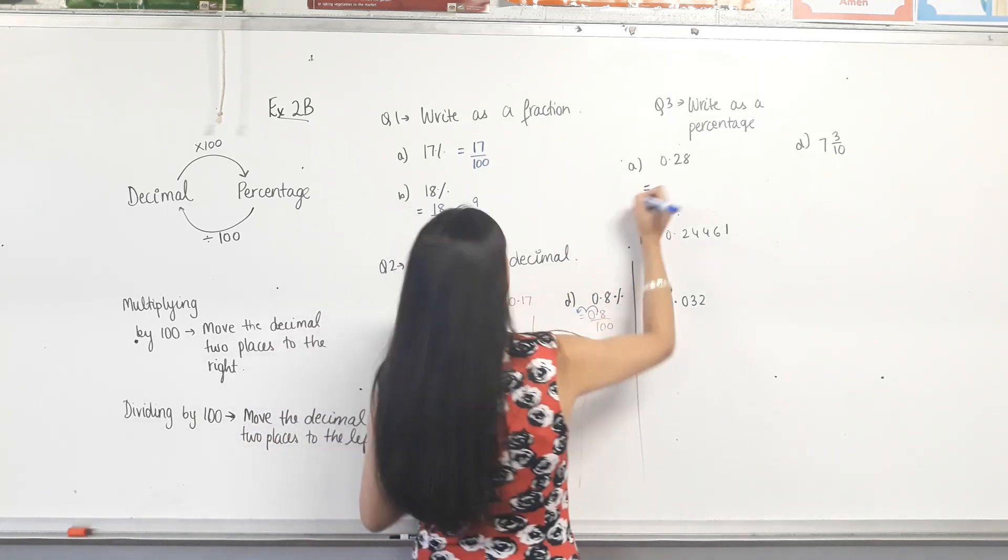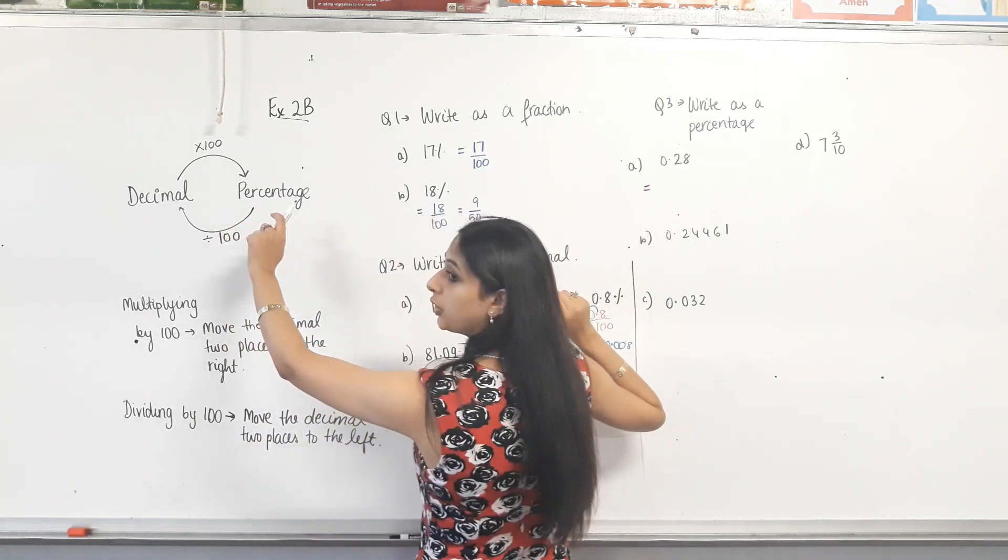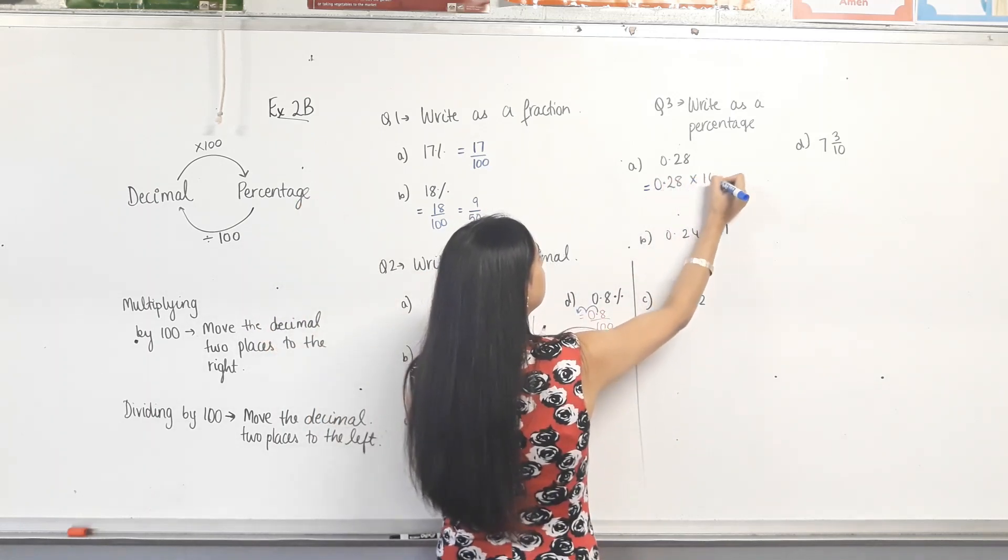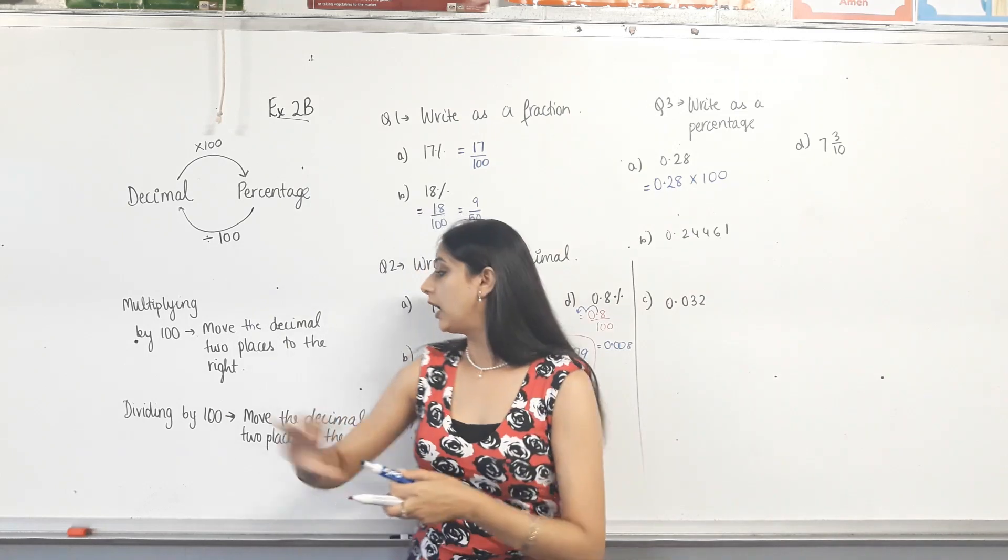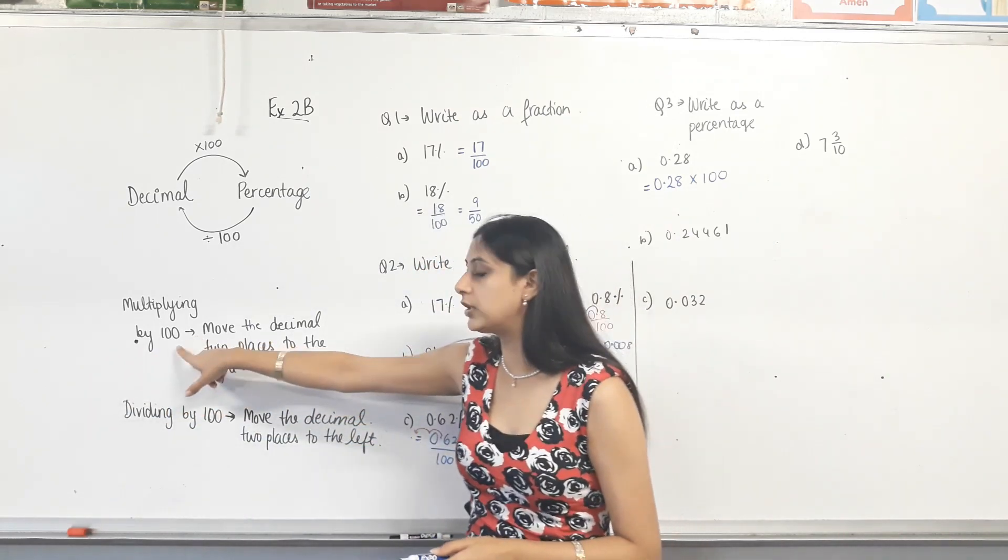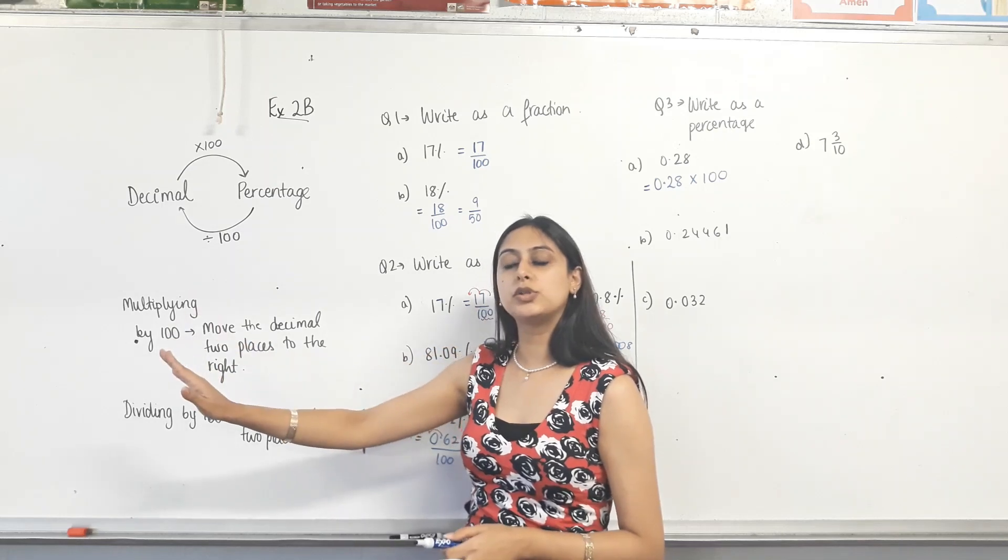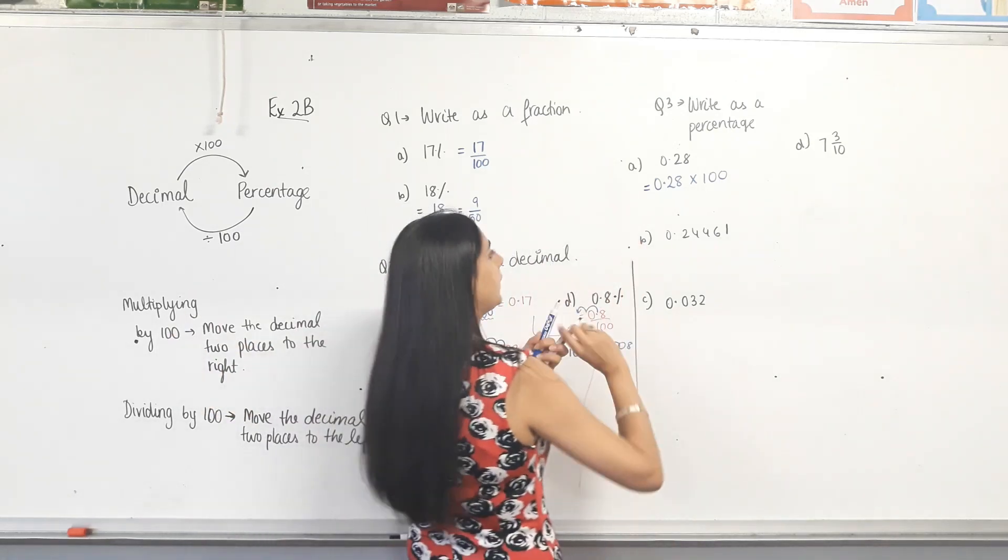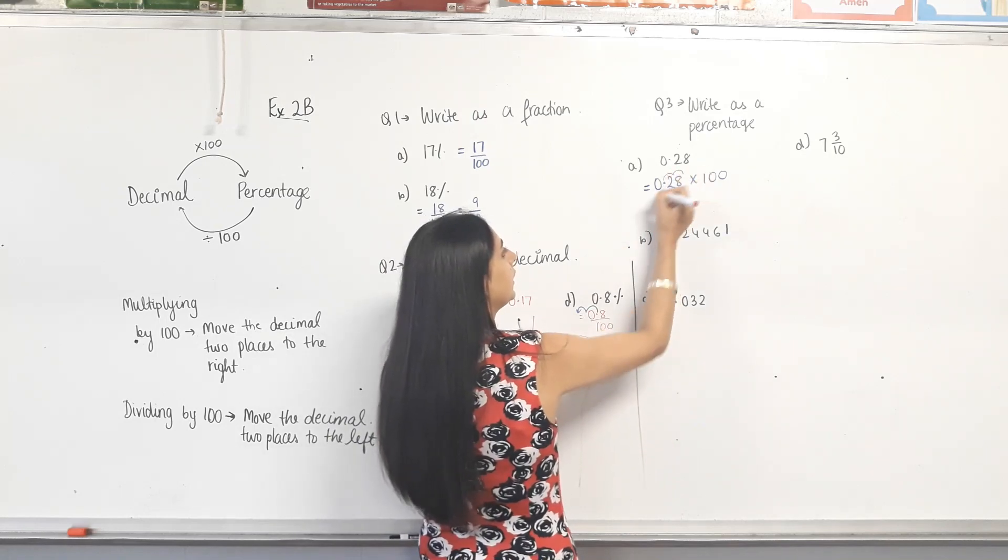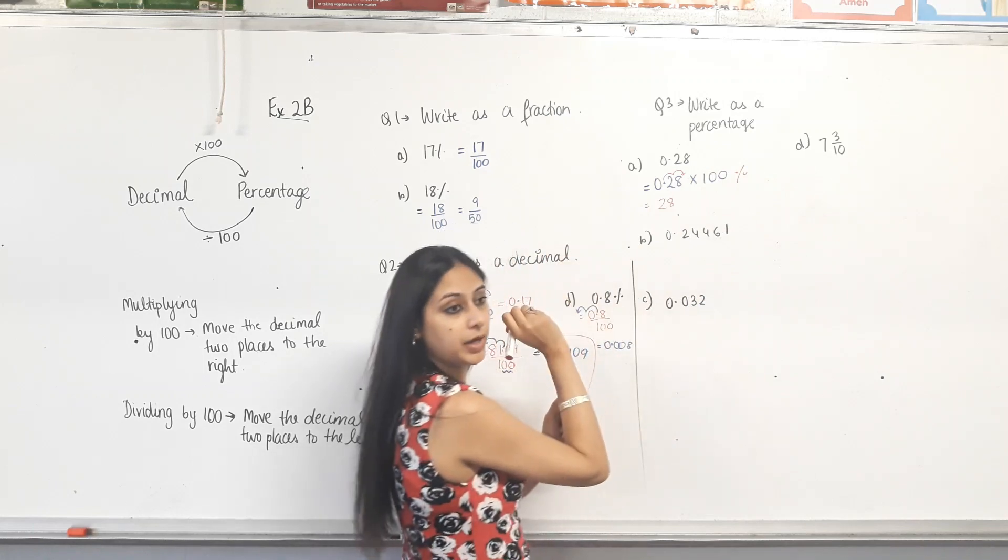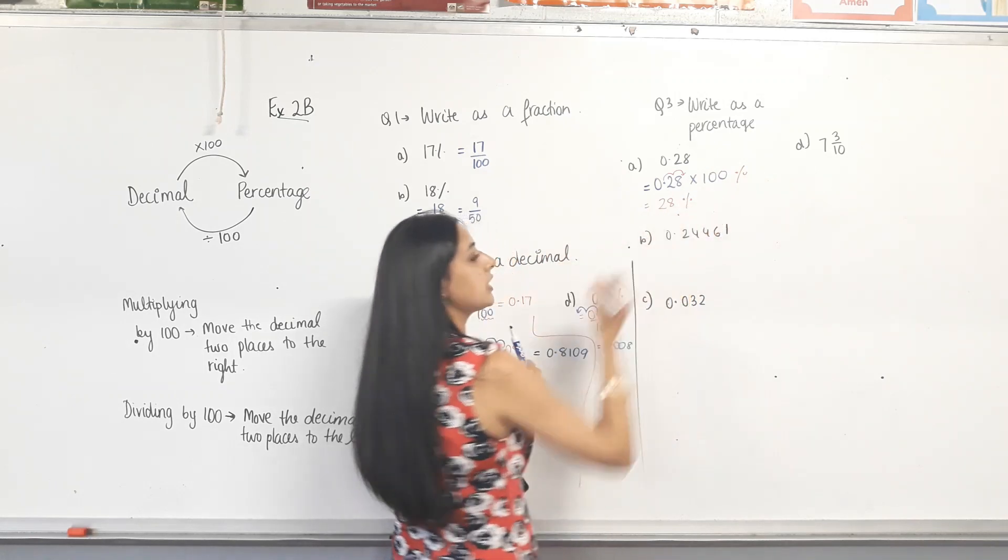Write as a percentage. From decimal to percentage, what do we do? Times by 100. So 0.28 times 100. Now, the shortcut is, when we're multiplying by 100, because we're multiplying by two zeros, we move the decimal two places to the right. We're making the number bigger. So, two places to the right. What will be the answer? 28. But as soon as you times by 100, you put a percent sign.